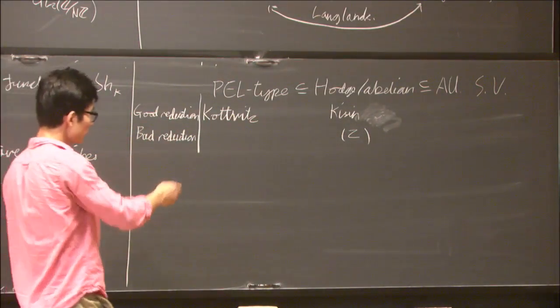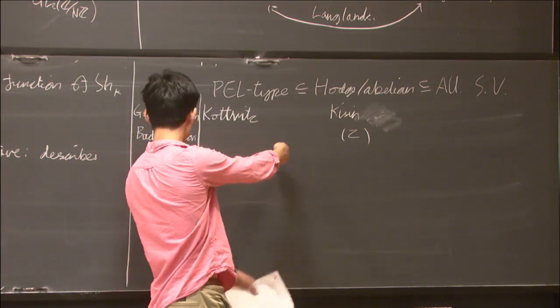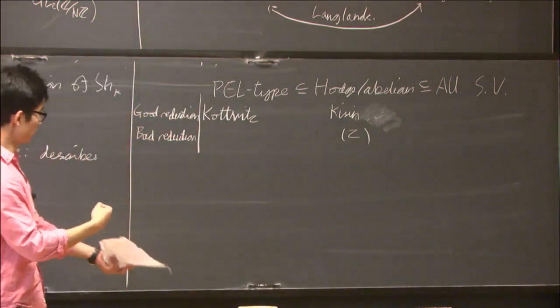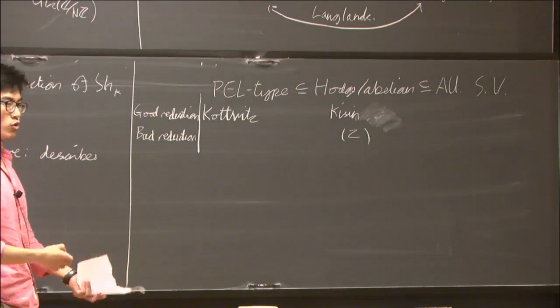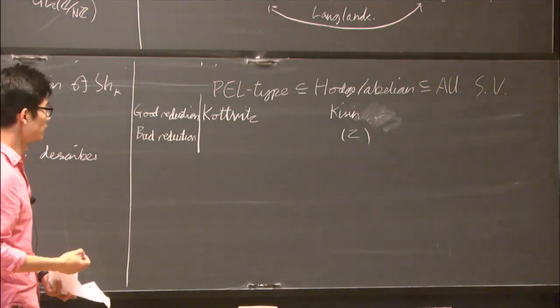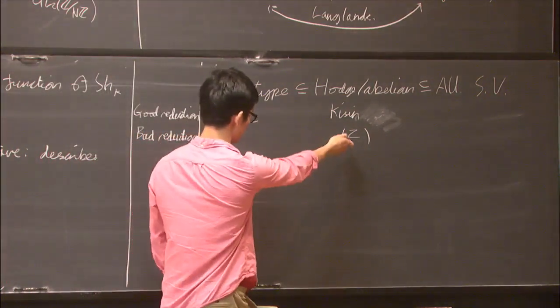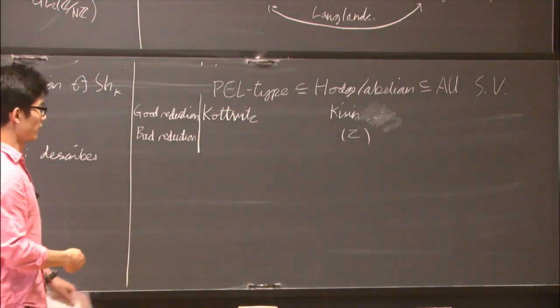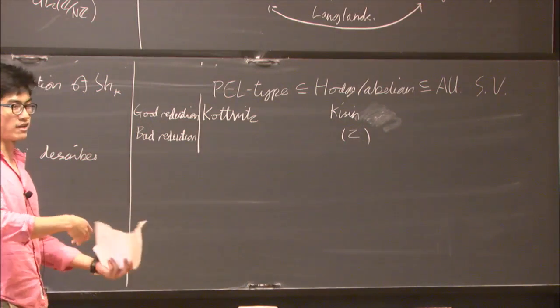The proof's a bit more difficult in the case of bad reduction. But the upshot is you can use the more interesting geometry to coax out some more interesting arithmetic results. For example, you can use some things that I've proved in my thesis to deduce a generalization to Shimura varieties of this classical Manin's problem.